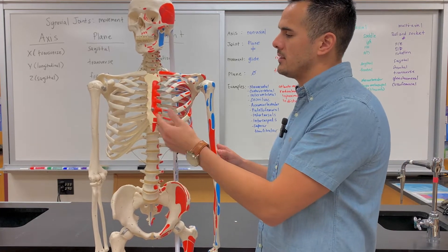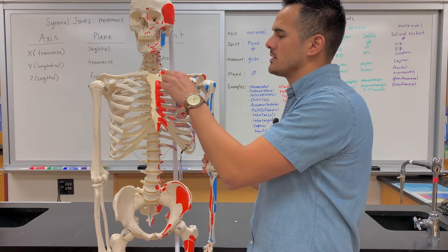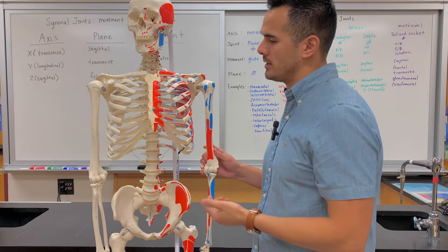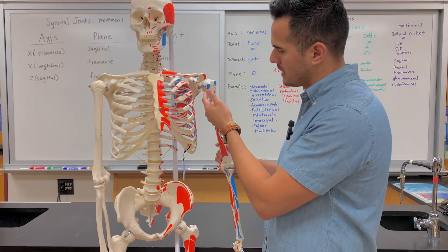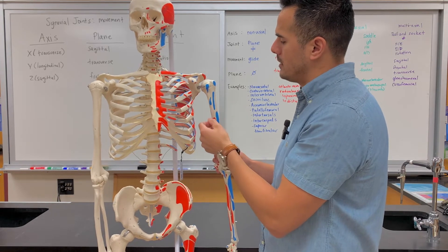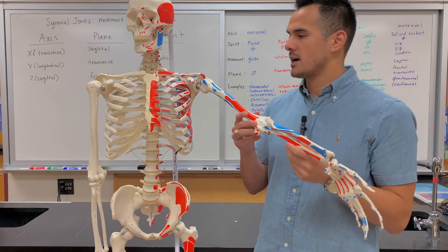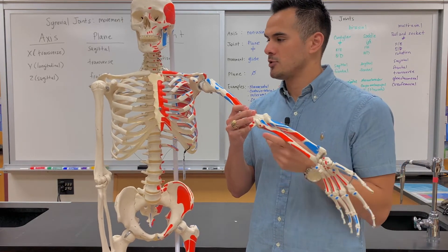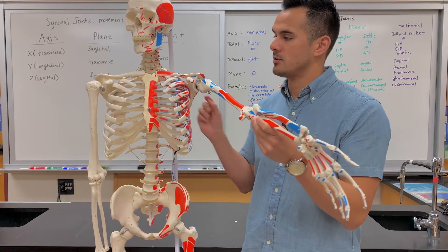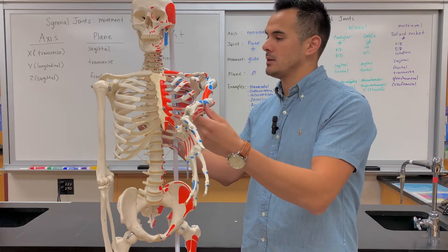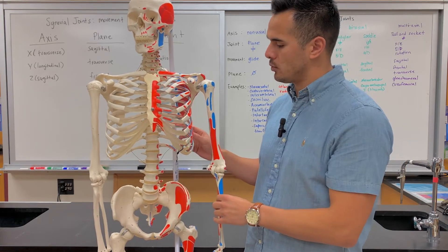Let's look at the pec major. The origin is here at the sternum as well as the medial clavicle and part of the ribs, and then the insertion is at the intertubercular sulcus of the humerus. This is a ball and socket joint. As that muscle starts to contract, it'll bring the humerus in this direction — it'll adduct. So once again, the insertion is moving towards the origin.